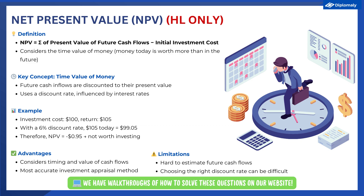The rate used to discount future cash flows is called the discount rate. The discount rate is influenced by the interest rate. If the interest rate is higher, the discount rate will be higher because the business earns more by leaving cash in the bank doing nothing. Therefore, future cash flows need to be higher to justify investment today.